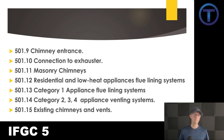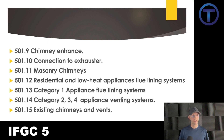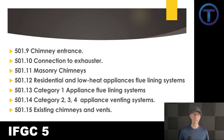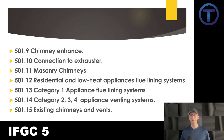The remaining sections in 501 include: 501.9 chimney entrance, 501.10 connection to an exhaustor, 501.11 masonry chimneys, 501.12 residential and low heat appliance flue lining systems, 501.13 category 1 appliance flue lining systems, 501.14 category 2, 3, and 4 appliance venting systems, and 501.15 existing chimneys and vents. Just be aware that this information is in these sections; this presentation focuses on what plumbers need to know most.